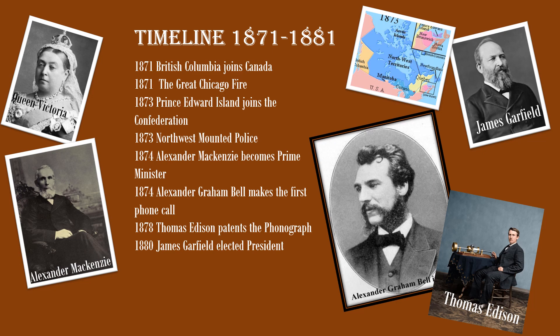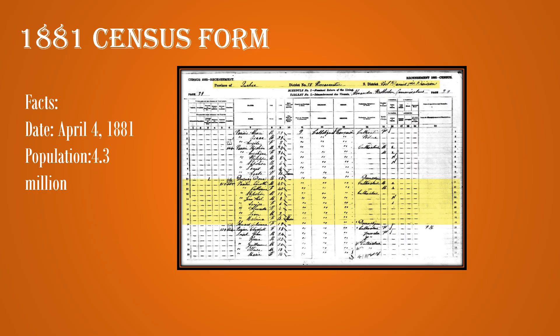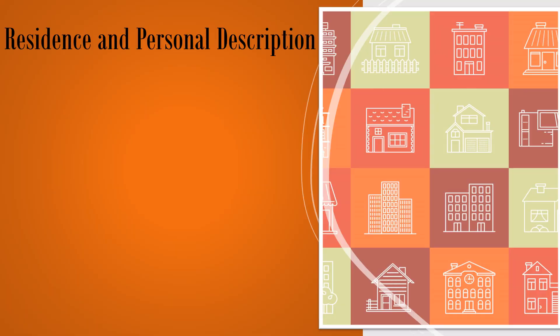Think about Alexander Graham Bell and Thomas Edison — these are monumental inventions that were to change the world, and we saw that in the years preceding the 1881 census. So now we have the 1881 census form. Here are some facts: it was taken April 4th, 1881, and Canada's population was now 4.3 million.